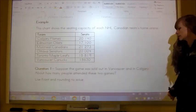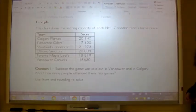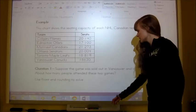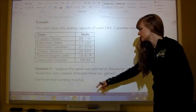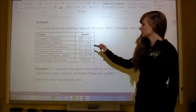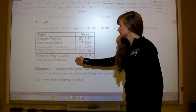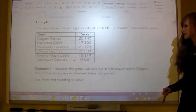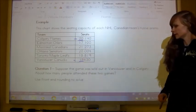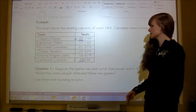The question says, question one, suppose the game was sold out in Vancouver and in Calgary. About how many people attended these two games? Use front-end rounding to solve. So front-end rounding, and we're going Calgary and Vancouver. This is Calgary, this is Vancouver. And we need to use front-end rounding. So we're just going to look at this and this number here. And it doesn't say compensation.